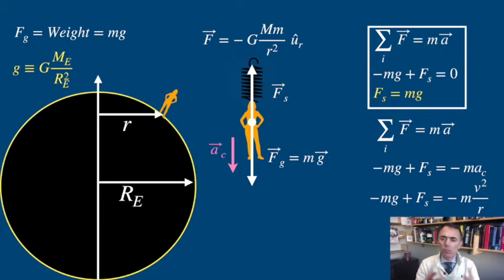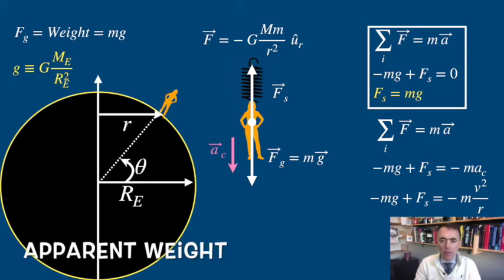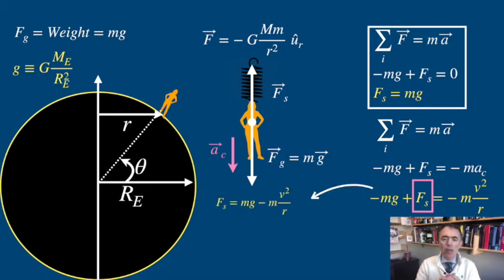We will be doing some trigonometry in a moment. So, if you are using a spring to measure your weight, you are not actually measuring mg. You are measuring an apparent weight. Let's do the math — let's solve for the force of the spring, which is the one that you are measuring in your experiment. F of the spring is equal to mg minus mv squared over r, where r is the radius of the trajectory.